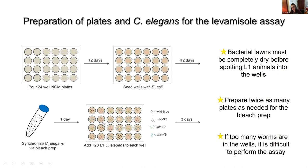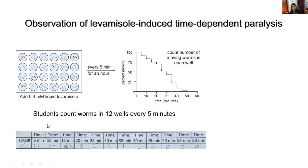24 hours after the bleach prep, we spin down the starved first larval stage animals — these are synchronized — and determine the number of animals in 3 microliters. Then we pipette about 20 to 30 L1 C. elegans into each well. It's important not to add too many animals to the well, because if there are a lot of animals, it's difficult to perform the assay in the time allotted. The animals are grown for three days, and at this point students are given a blank data sheet to record the number of animals moving at each time point. Students add 0.4 millimolar liquid levamisole to each well and stagger the time of addition according to the number of wells being assayed.